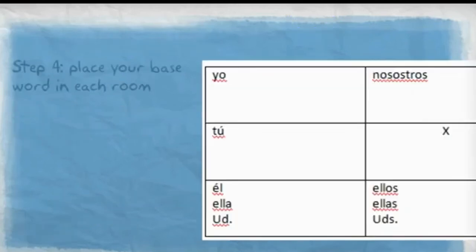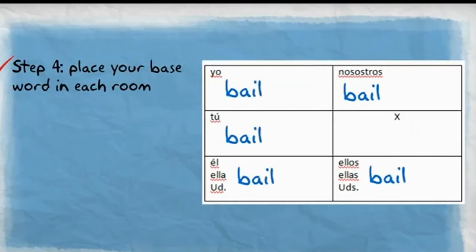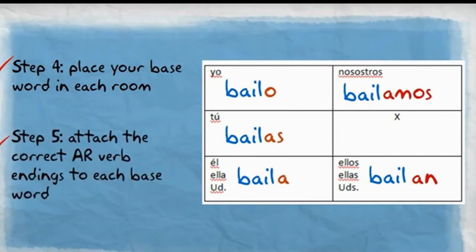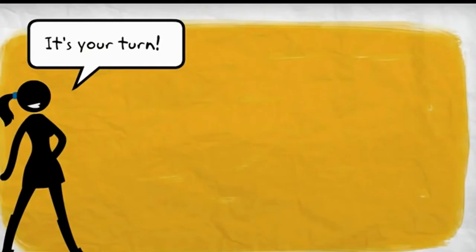Step four: place your base word in each room with the subject pronouns. Step five: attach the correct AR verb endings to each base word.